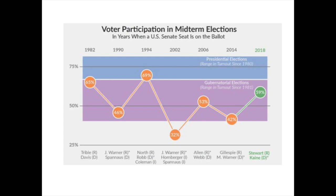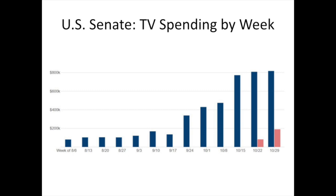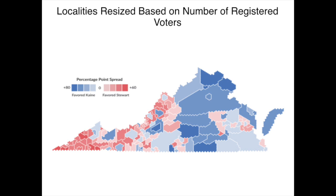This is the competitiveness of the U.S. Senate race — TV spending by week. You can see the message in this campaign was totally dominated by Tim Kaine, who had the money to effectively communicate. This is the map of Virginia resized so every locality is sized according to population. You really understand the power and influence of densely populated northern Virginia. Those two big dark ones in the corner are Arlington and Alexandria. Fairfax County is the big one that comes all the way down. This is the change by precinct compared to 2016 in the Senate race, and you can see that other than a section in Southside Virginia, everything was moving in one direction.